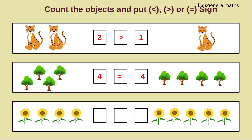Next we are going to count the next object. One, two, three, four. How many flowers? Four flowers. One, two, three, four, five. How many flowers? Five flowers. While comparing these two numbers, which number is greater? Any guess? Yes, five is greater. So the crocodile will open the mouth towards five. So we will say four is less than five.